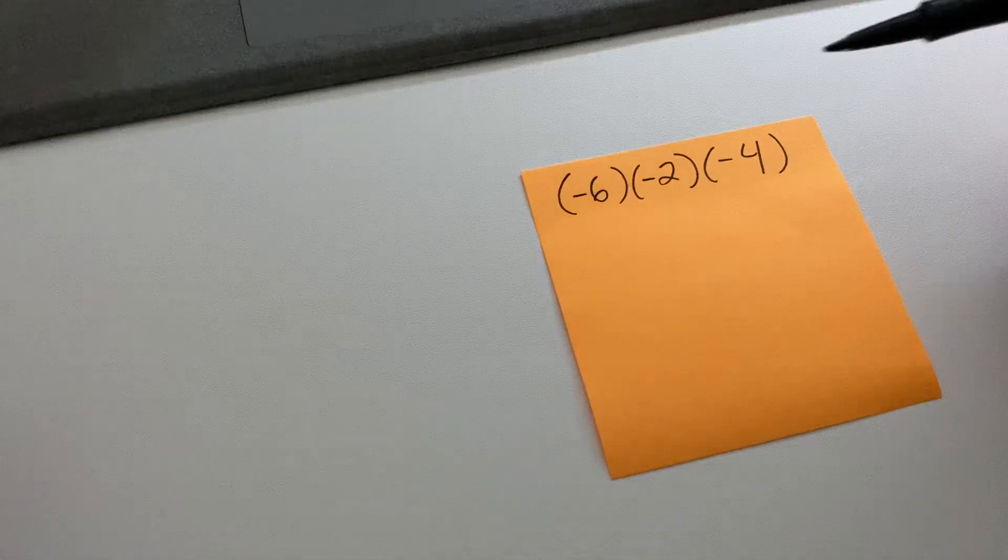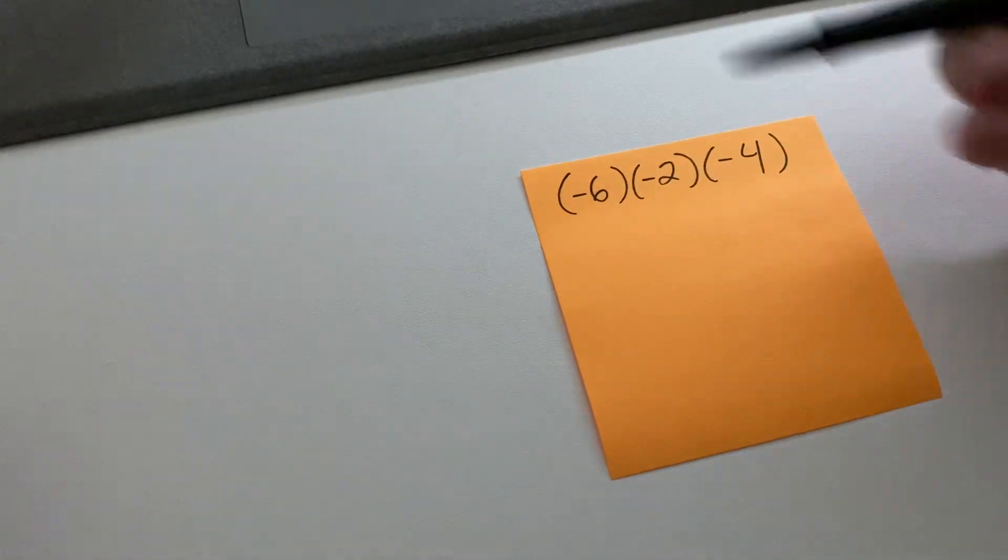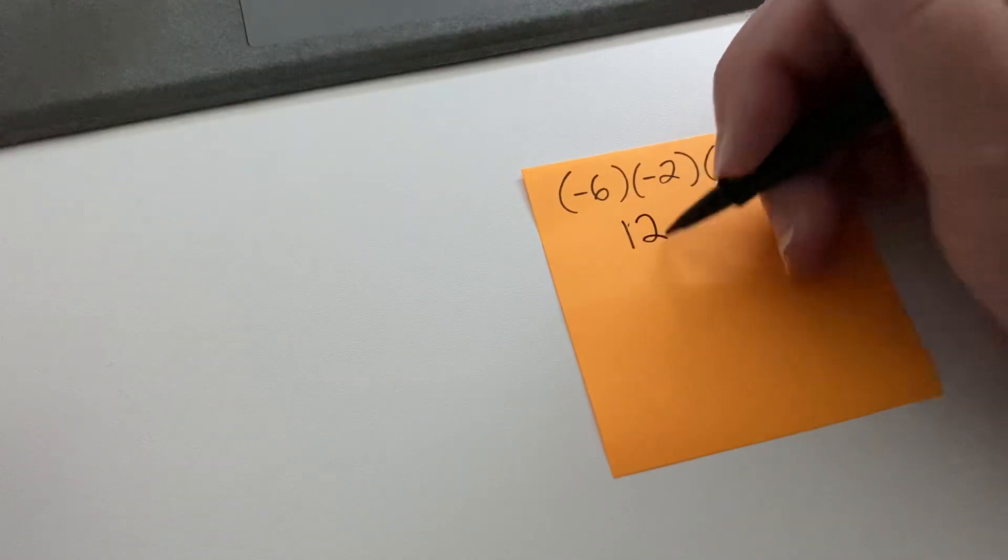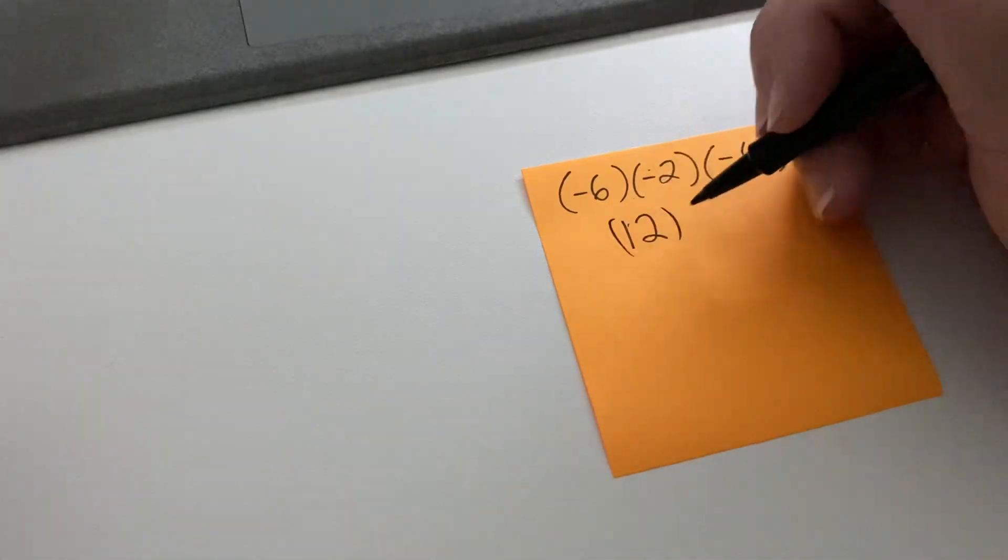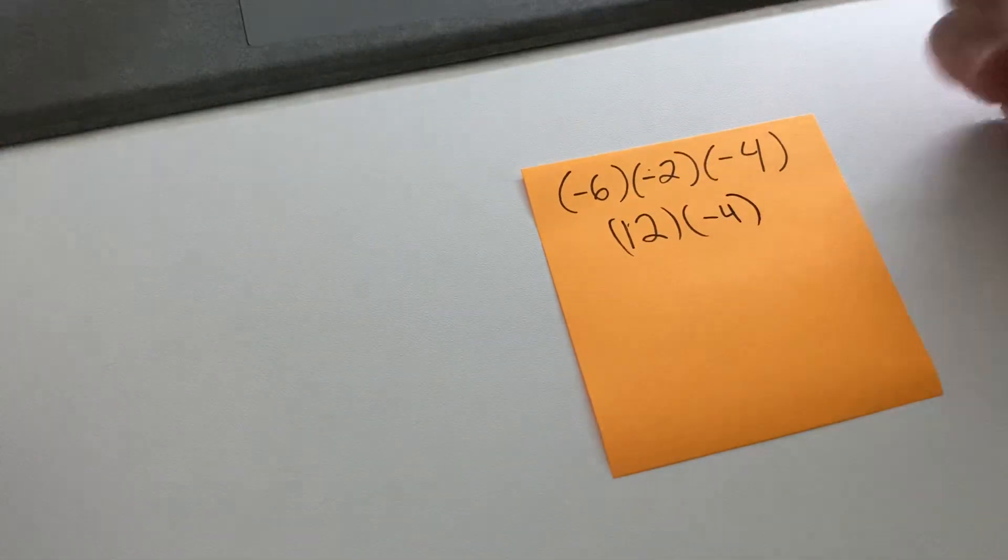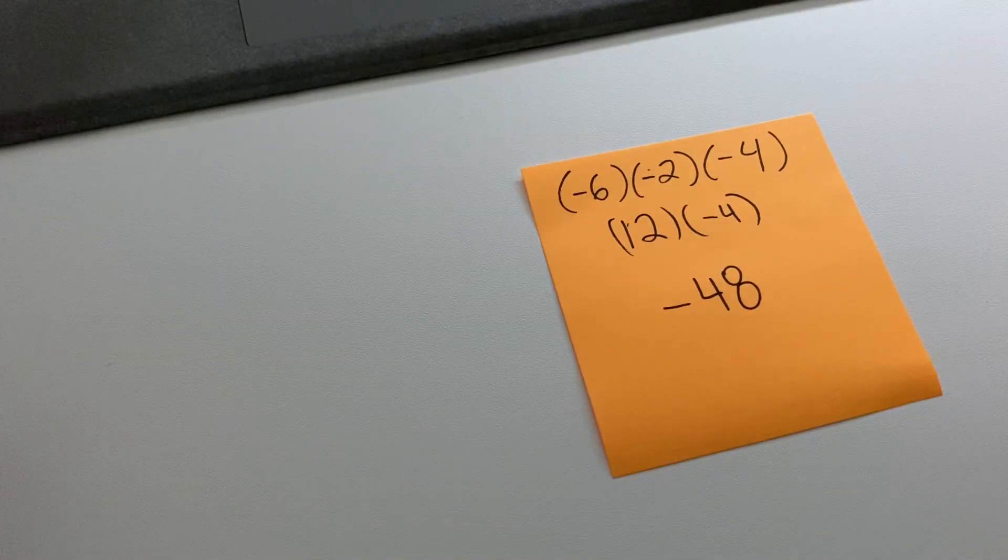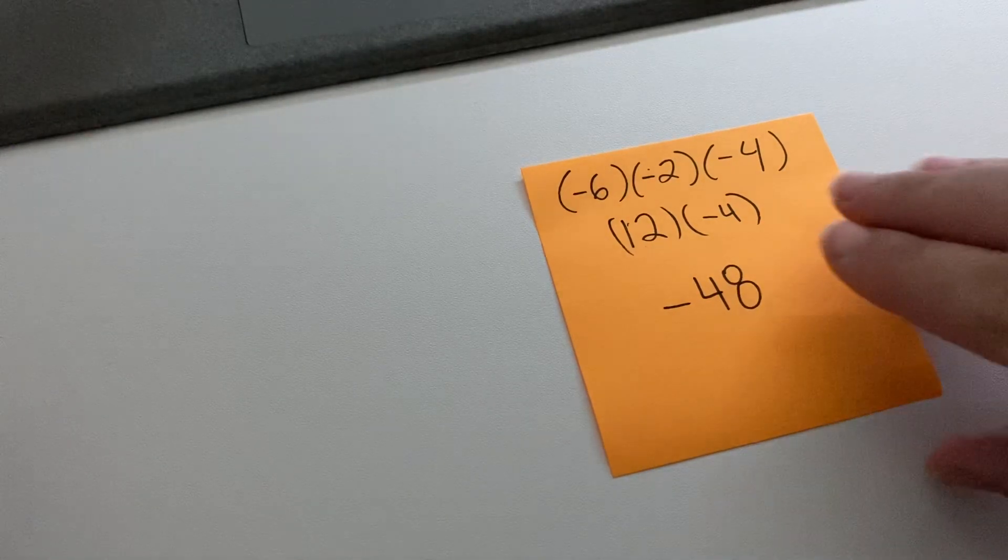So here's another one for us. There's an odd number of negatives here. There's one, two, three negatives. If we go through the process here, we would get a negative times a negative is a positive, so positive 12, and then positive 12 times negative 4, which would equal negative 48. Now that's something you might be able to do in your head, or you might have to do it out like that. Either way, you're going to get the same answer.